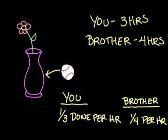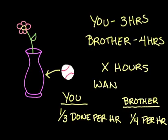Since we don't know exactly how long it's going to take for you guys to do this, we're going to say that you're going to work on the job together for X hours. And in the end, since you want the one vase glued back together, you're going to want one full job done. And this gives us what we need to set up our equation.